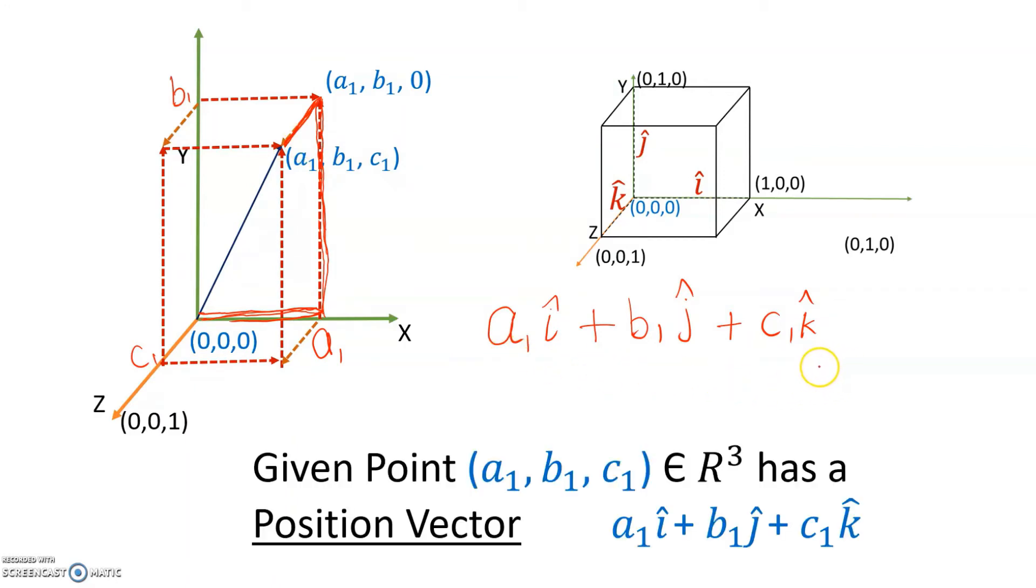So in simple terms given a point (a1, b1, c1) you can write its position vector as a1 i-cap plus b1 j-cap plus c1 k-cap.